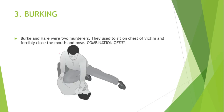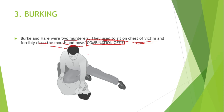The next topic is the burking phenomenon. Burking involved two murderers who would sit on the chest of the victim and forcibly close the mouth and nose. This is an important MCQ concept that has appeared more than once in past papers. Burking is a combination of smothering and traumatic asphyxia.